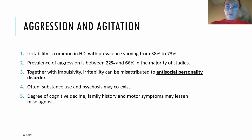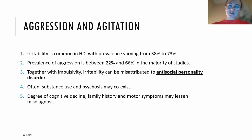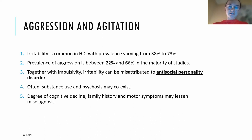Another important neuropsychiatric symptom is aggression and agitation. Irritability is common in HD with a prevalence varying between 38% to 73%, and the prevalence of aggression is between 22% and 66% in most studies. Together with impulsivity, irritability can unfortunately be misinterpreted by doctors and socially as antisocial personality disorder. Substance abuse and psychosis may also coexist, and degree of cognitive decline, family history, and motor symptoms may lessen the risk of misdiagnosis.